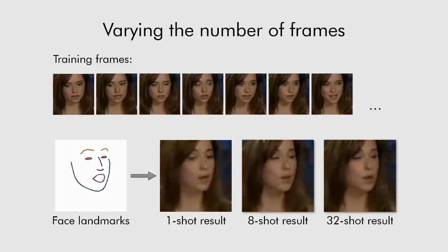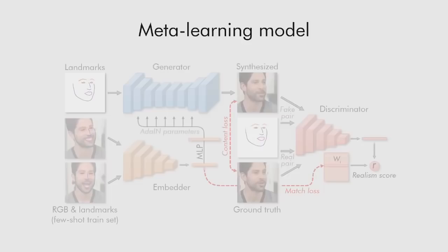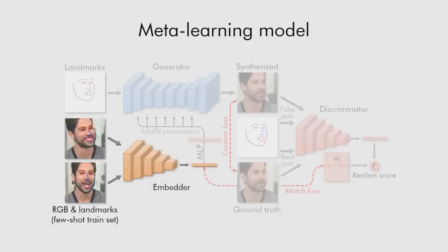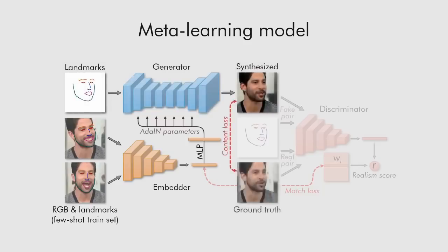Our approach uses a meta-learning stage performed on a huge dataset of videos. For the results in this presentation, the VoxCeleb2 dataset is used. Three networks are trained during the meta-learning stage. The embedder network maps frames concatenated with landmarks into vectors containing pose-independent information. These vectors are used to initialize the parameters of adapted layers inside the generator network, which maps landmarks into synthesized video.